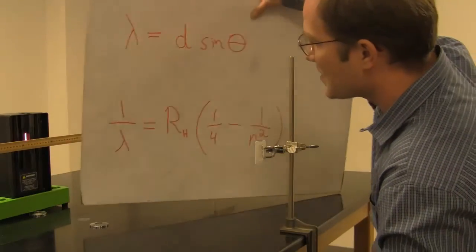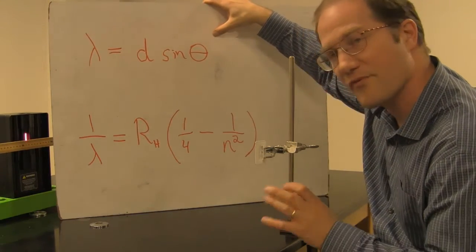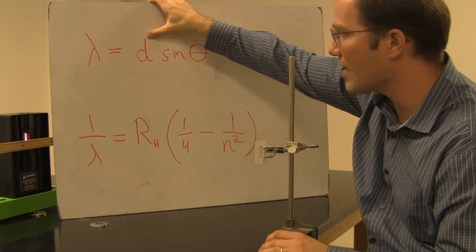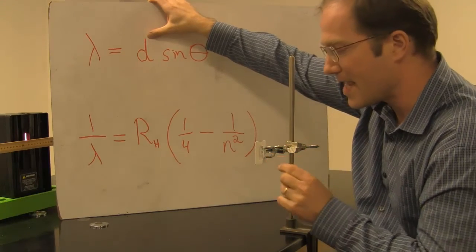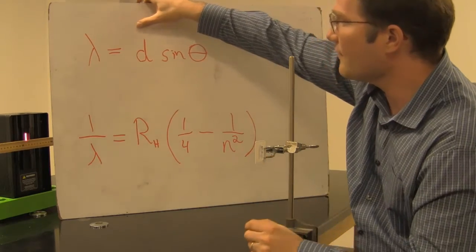Let's take a look at this equation. Lambda is equal to d sine theta. And this is sort of a diffraction grating equation because d references the slit distance. Lots of little slits in here.